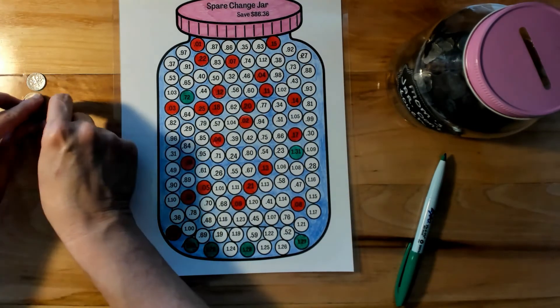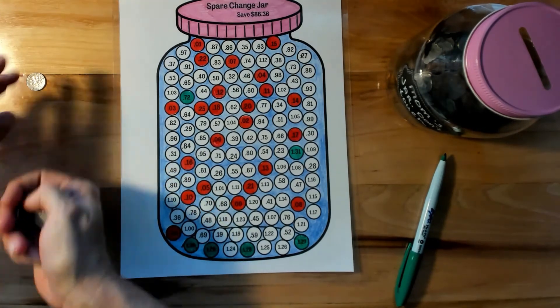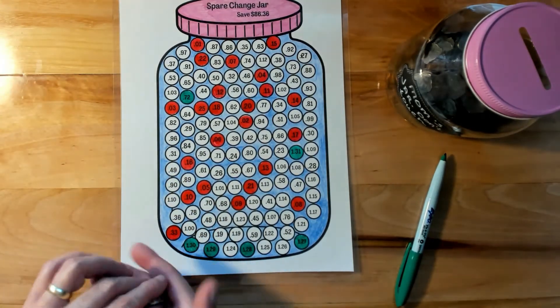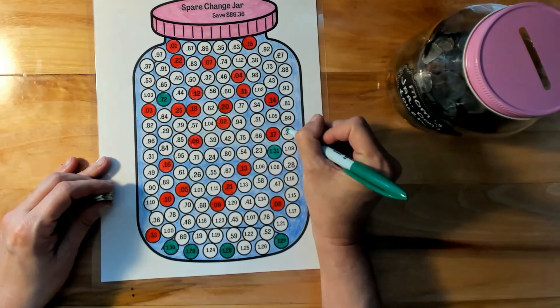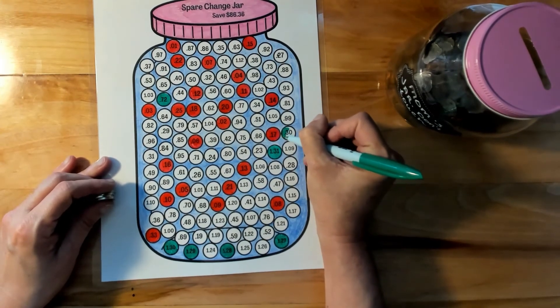Let's see what we got left. $10, $20, and $30. So I'll just color $30 in, and that is it with the change.